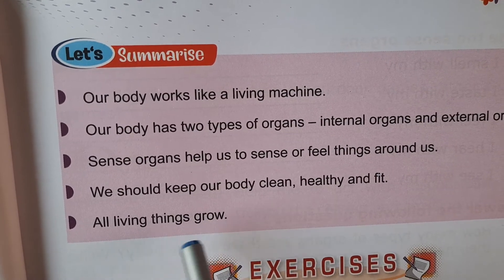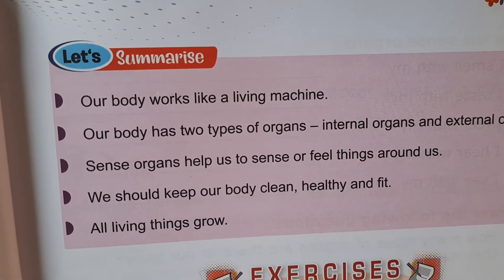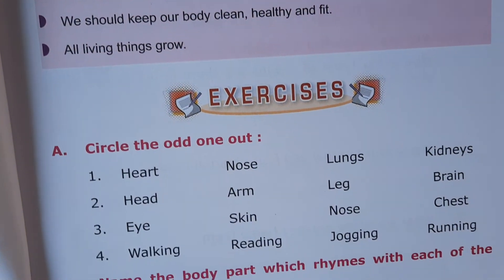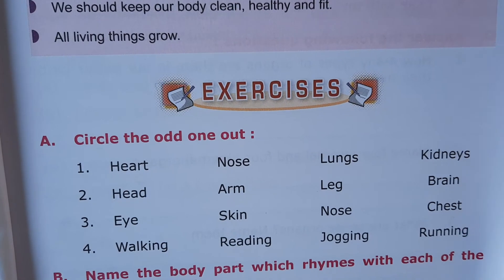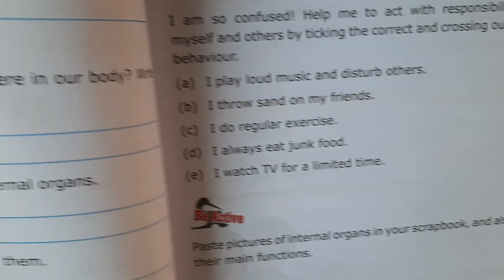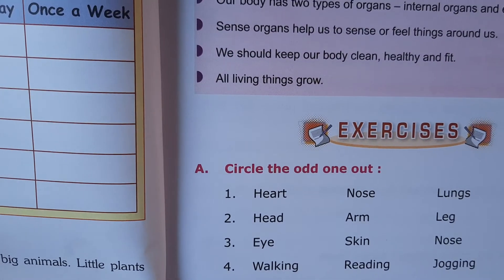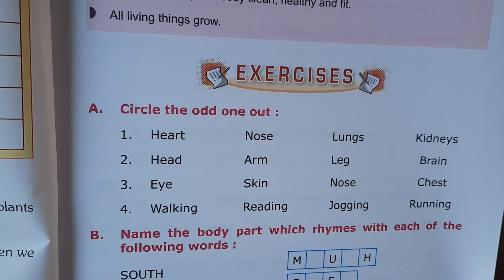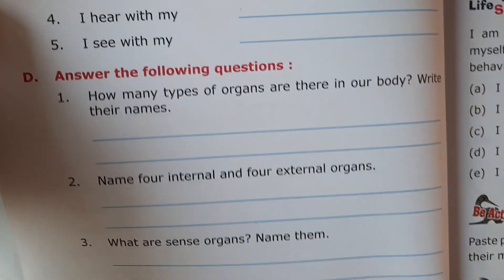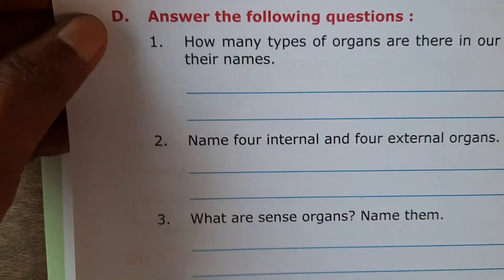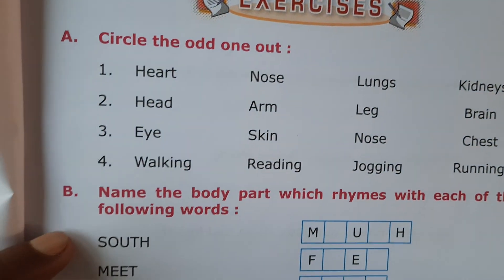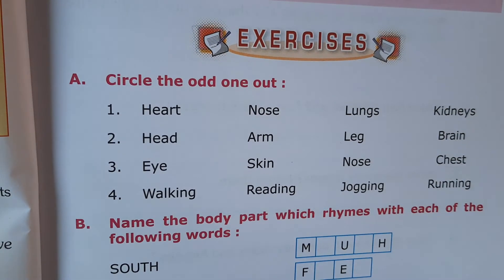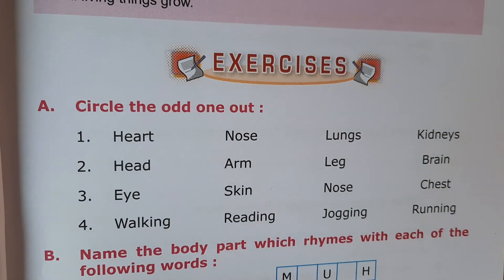All living things grow. So children, it is the end of this chapter. Now in the exercise, A, B, C have objective questions — please attempt those. Section D has long answer type questions whose answers will be sent on WhatsApp. If you have any difficulty, answers to A, B, C will also be sent. Thank you very much.